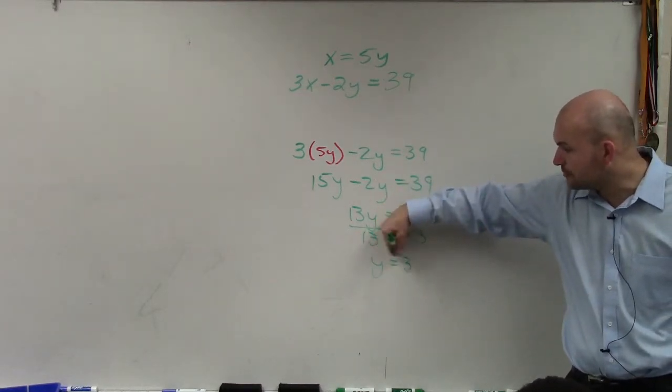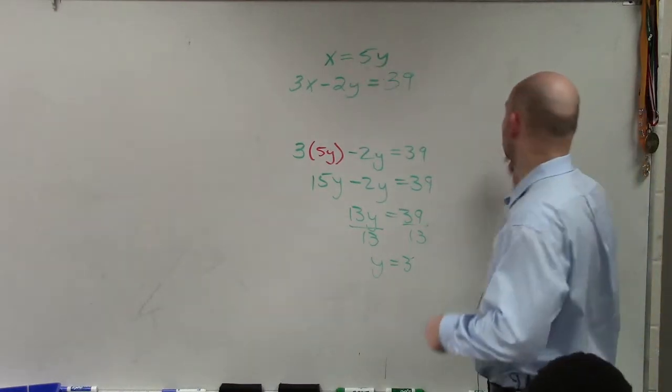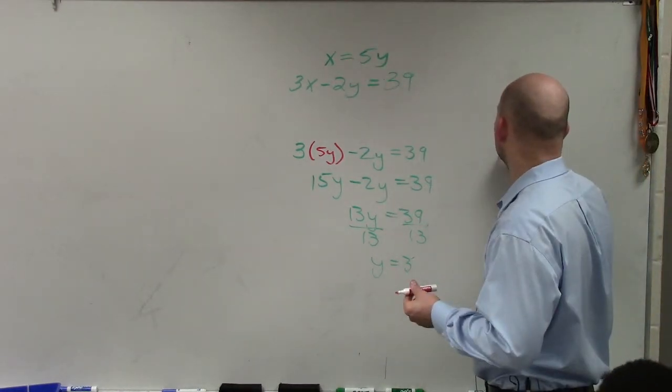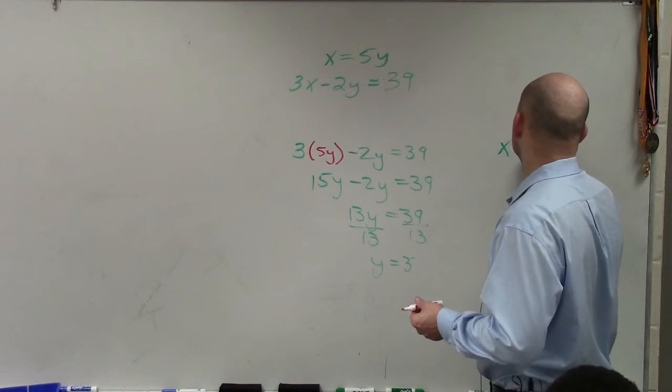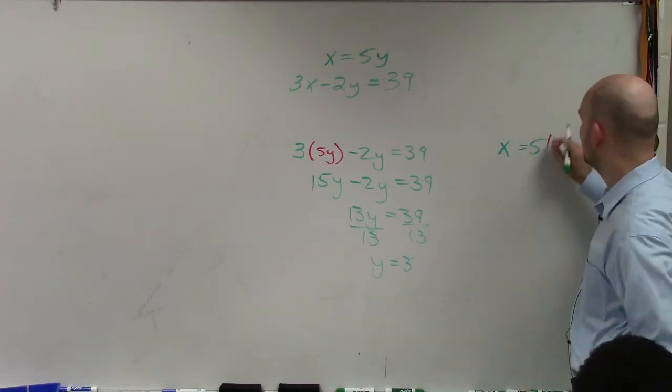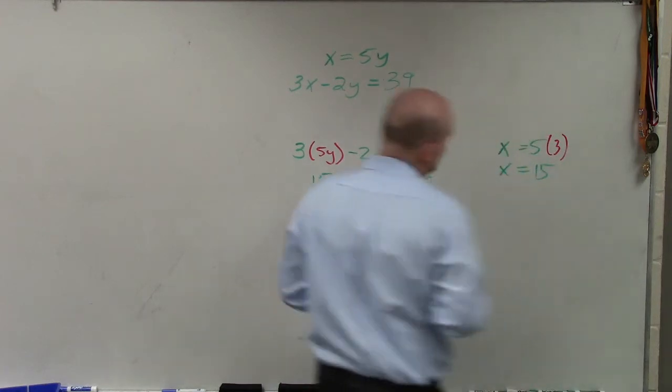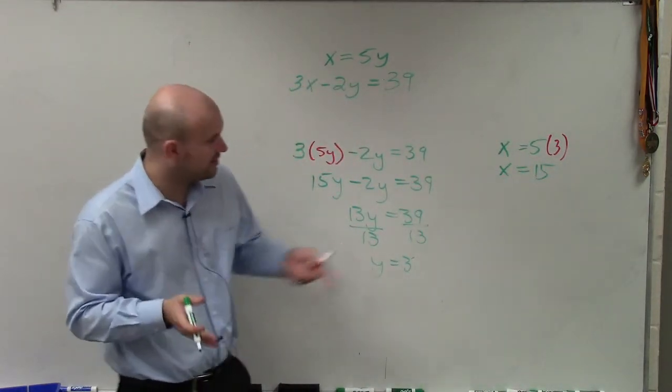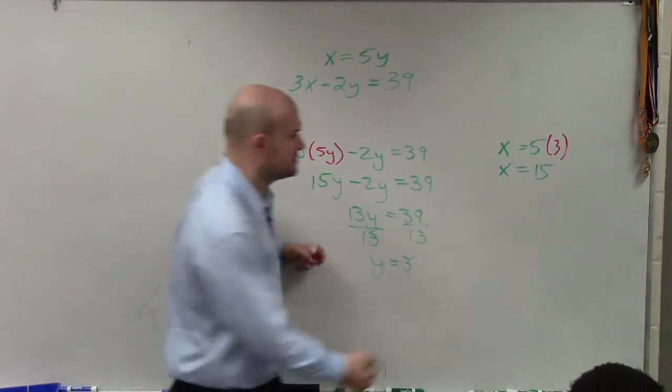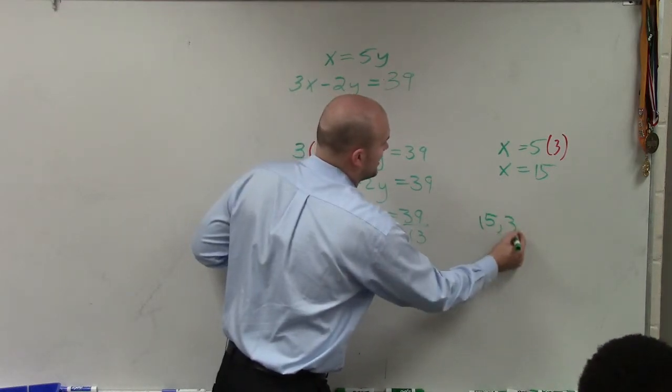So I know the value of y is 3. So then I go back up to my equation, and I say, all right, fine. Let's plug in the value of what y is. And that is 3. Therefore, x equals 15. Now I am able to algebraically determine that the point where these two intersect is going to be 15 comma 3.